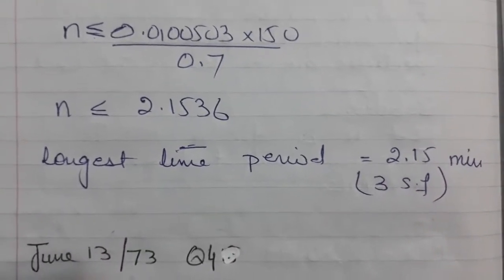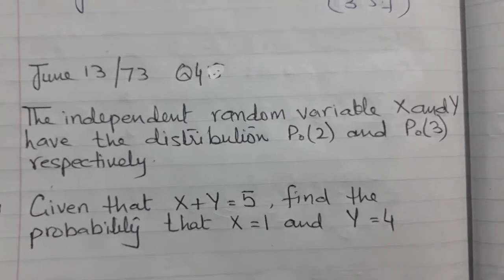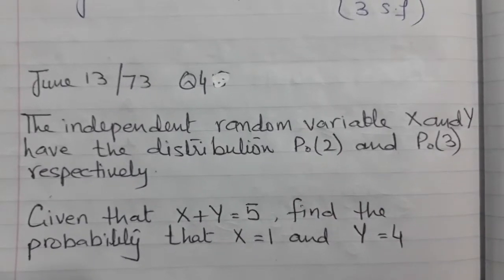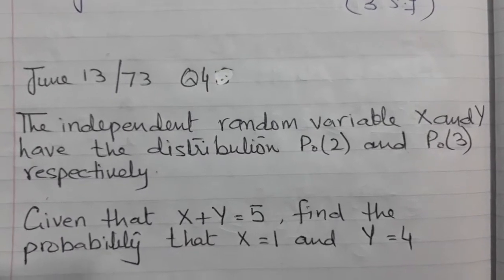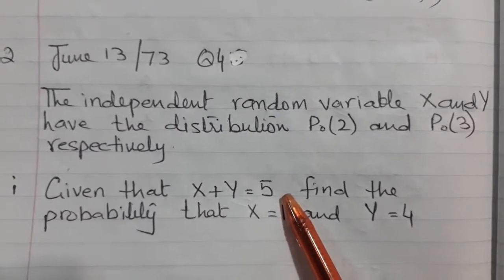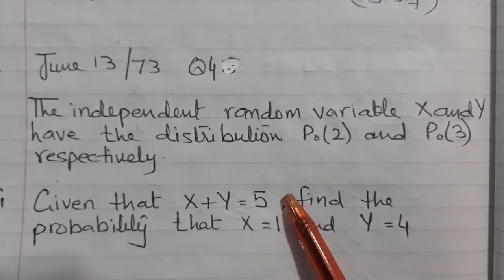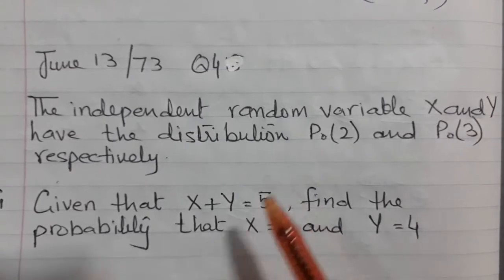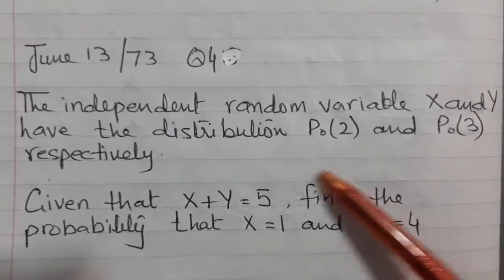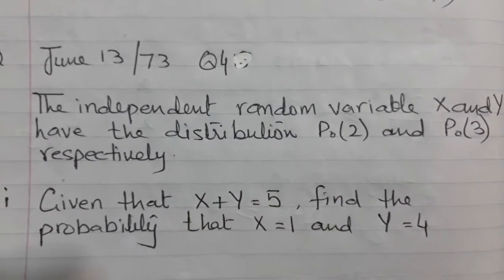Now let's see another example — a very challenging question for most students. We have two independent random variables X and Y with means 2 and 3 respectively. The question says: given that X plus Y equals 5, find the probability that X equals 1 and Y equals 4. Most students do not understand what this means — it is basically conditional probability, so the concepts are merged here.